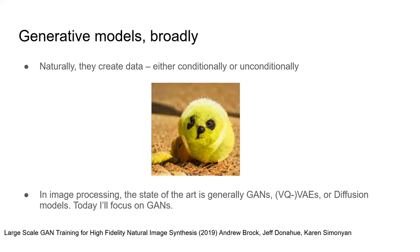In image processing, the state of the art for generative modeling — going from whatever you're conditioning on, or just noise, to images or data — is GANs, VQVAEs generally, or diffusion models. I'm going to focus on GANs, but I think there's a lot of interesting work being done in image processing that could be translated into materials informatics leveraging things like VQVAEs and diffusion modeling.